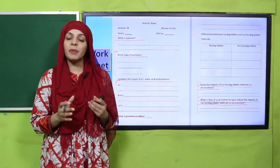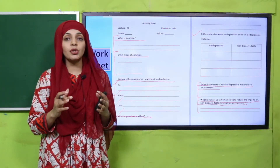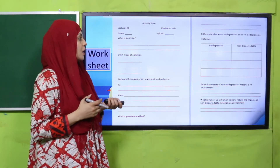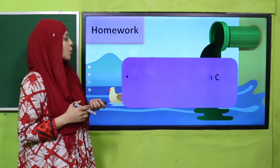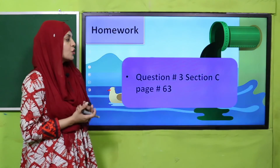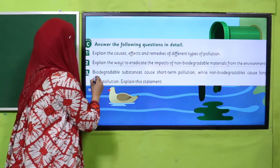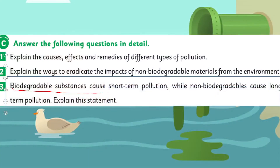I hope everybody has done it and submitted to your teacher for grading and marks. For homework, do question number three from section C given on page number 63: 'Biodegradable substances cause short-term pollution while non-biodegradable materials cause long-term pollution — explain this statement.'